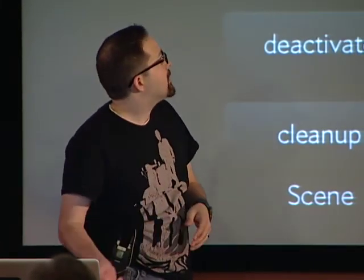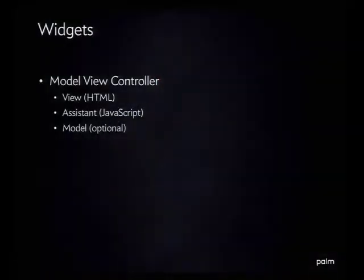So that's stages and scenes. Now we have widgets. All of the widgets are built in JavaScript. They are all built on the model-view-controller design pattern. The view is HTML and CSS. The controller — we call them assistants — is the actual JavaScript logic where you put your event handlers and the logic of your application. And then there are models. Most of the widgets have models built into them that you can reuse, so you only need to create a separate model when you need to do something special.